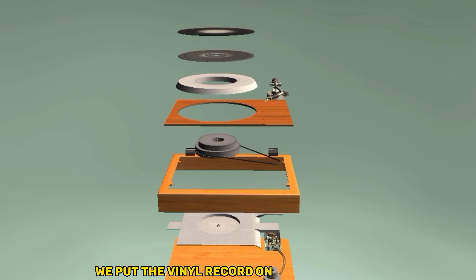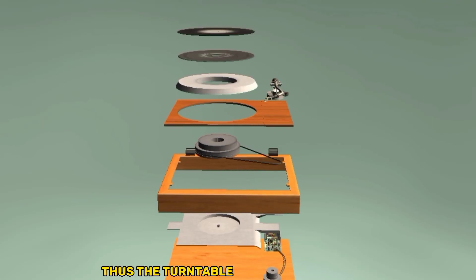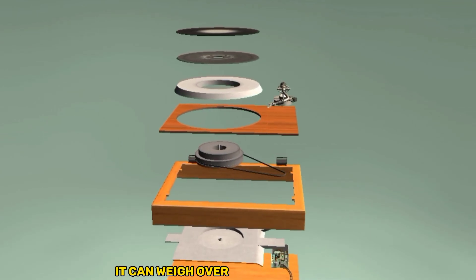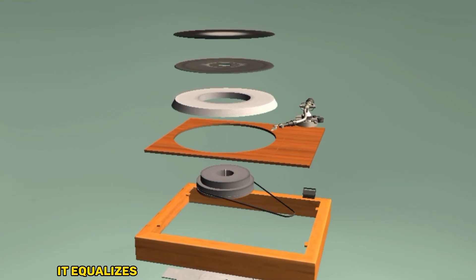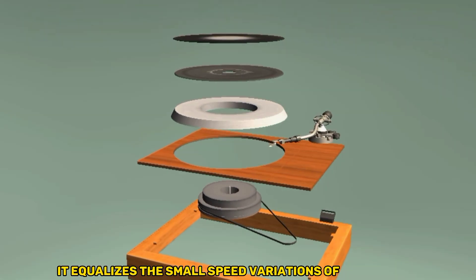We put the vinyl record on the turntable, which is usually moved by a drive belt. Disc rotation must be even. Thus, the turntable is relatively heavy. It can weigh over 2 kg. Due to inertia, it equalizes the small speed variations of the motor.